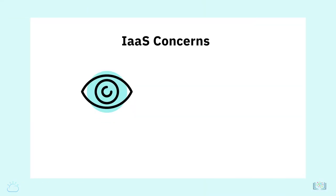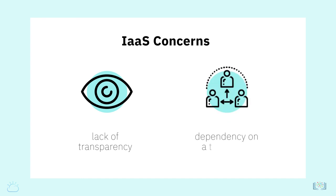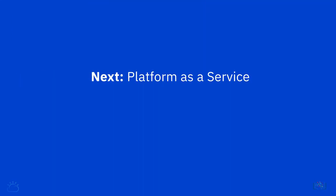While there are some concerns regarding the lack of transparency in the cloud infrastructure's configuration and management, and dependency on a third-party for workload availability and performance, Infrastructure-as-a-Service is the fastest-growing cloud model today. In the next video, we will look at the Platform-as-a-Service model, its features, benefits, and some use cases.